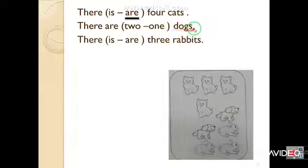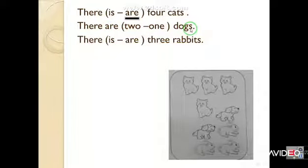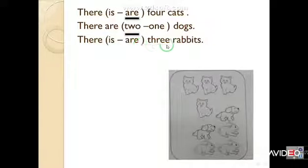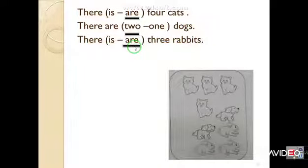There are two or one dogs? We have 'are' and 's,' which means plural — more than one thing, so: 'There are two dogs.' Three rabbits — 'There are three rabbits.' Excellent, Junior One! This is today's video. See you in the next one. Bye!